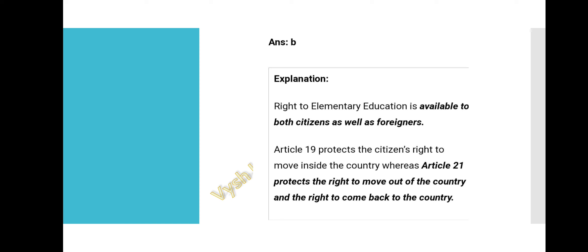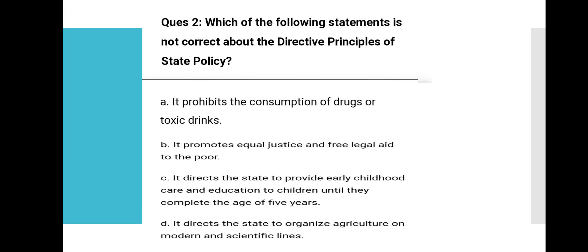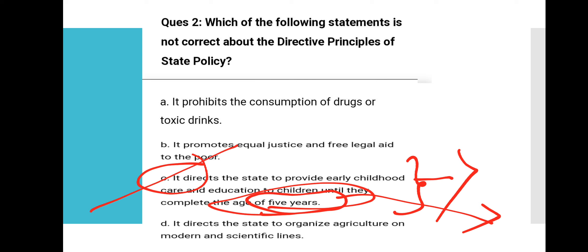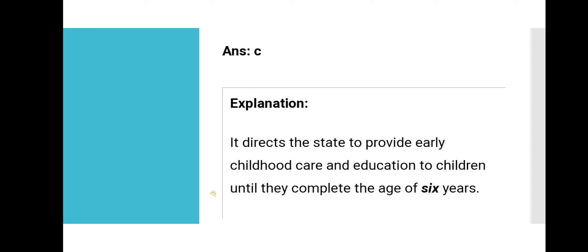Question 2: Which of the following statements is not correct about the Directive Principles of State Policy? Statement C states it directs the state to provide early childhood care and education to children until they complete the age of five years. This is partially correct but has one mistake — the correct age is six years, not five years. So Option C is not correct and is therefore the answer to question 2.